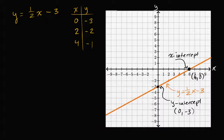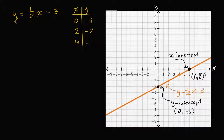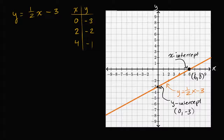You can validate that six comma zero satisfies this equation. If x is six, one half times six is three, minus three is indeed equal to zero. So the x-intercept is the point where a graph intersects the x-axis, and the y-intercept is the point where a graph intersects the y-axis. Let's try to see if we can find the x and y-intercepts for a few other linear equations.